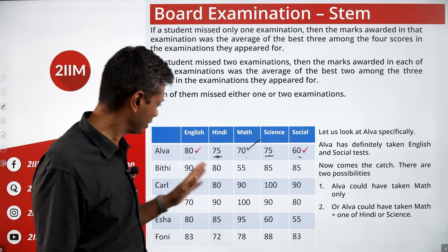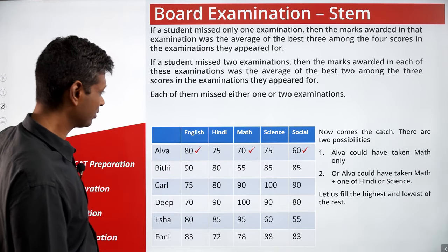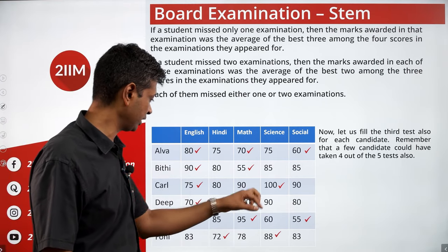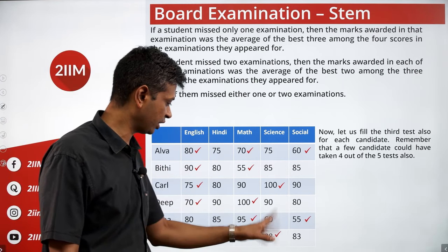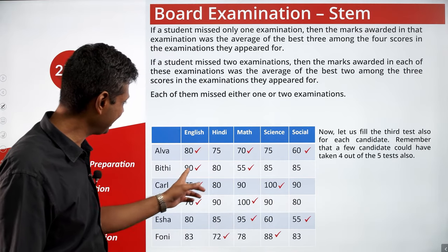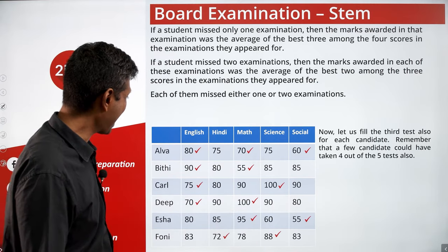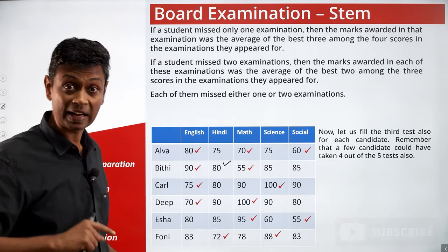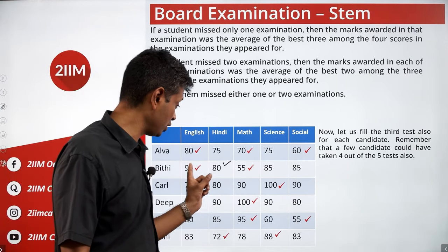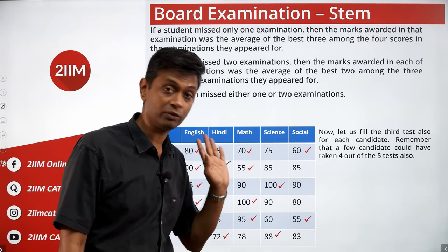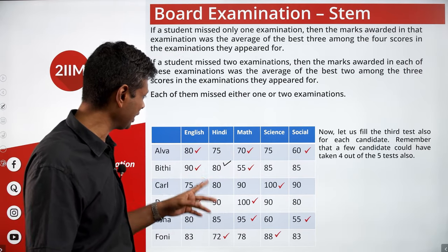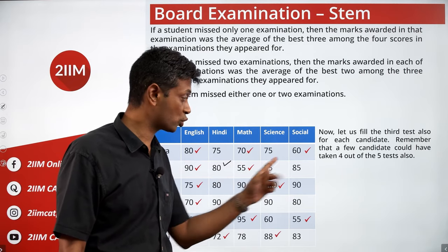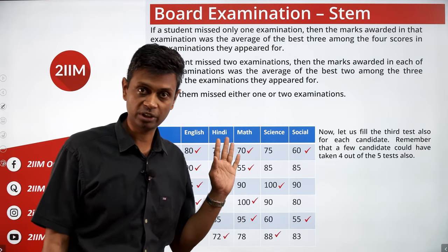We do this for everybody. For Biti: highest is 90, lowest is 55. Average of 90 and 80 is 85, so she's taken that exam too. Biti has definitely taken English, Hindi and Math. She could have taken Science, or Social, or skipped both — all three possibilities exist.